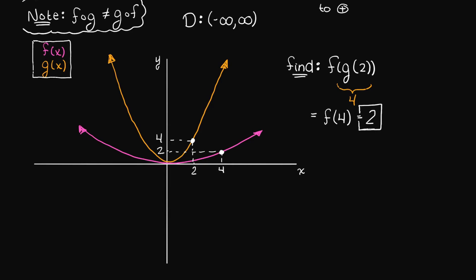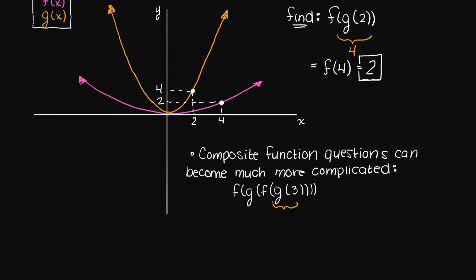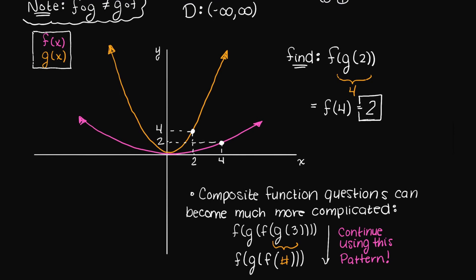These type of graph composite function questions can be even longer, such as f of g of f of g at 3. And you would do the same thing, just break it up into easier to understand portions, and by that I mean let's find g at 3 and then move on to the next step once you have found that value so not to get overwhelmed.